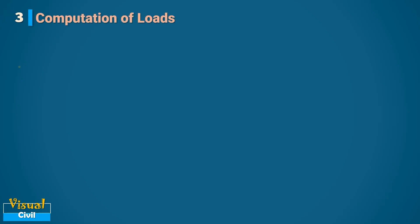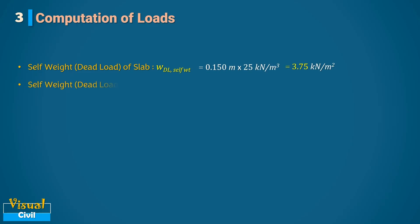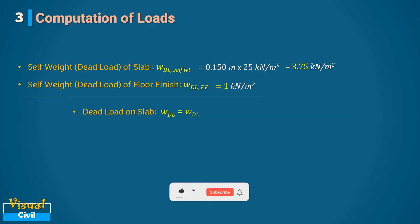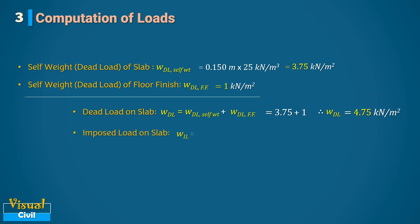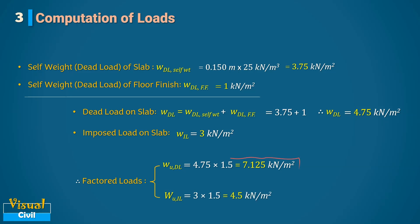Let us compute the loads acting on the slab. The self-weight or dead load is computed by multiplying slab thickness with concrete density, giving 3.75 kN/m². The dead load of floor finish is 1 kN/m², making the total dead load 4.75 kN/m². The imposed or live load is 3 kN/m². The factored dead load and imposed load are obtained by multiplying by 1.5.